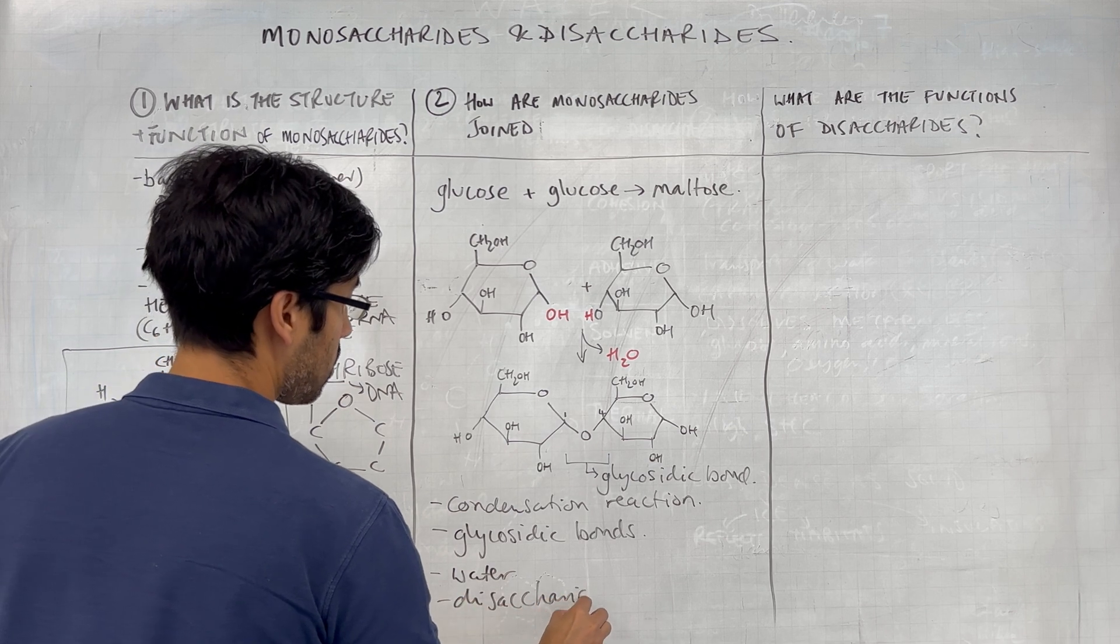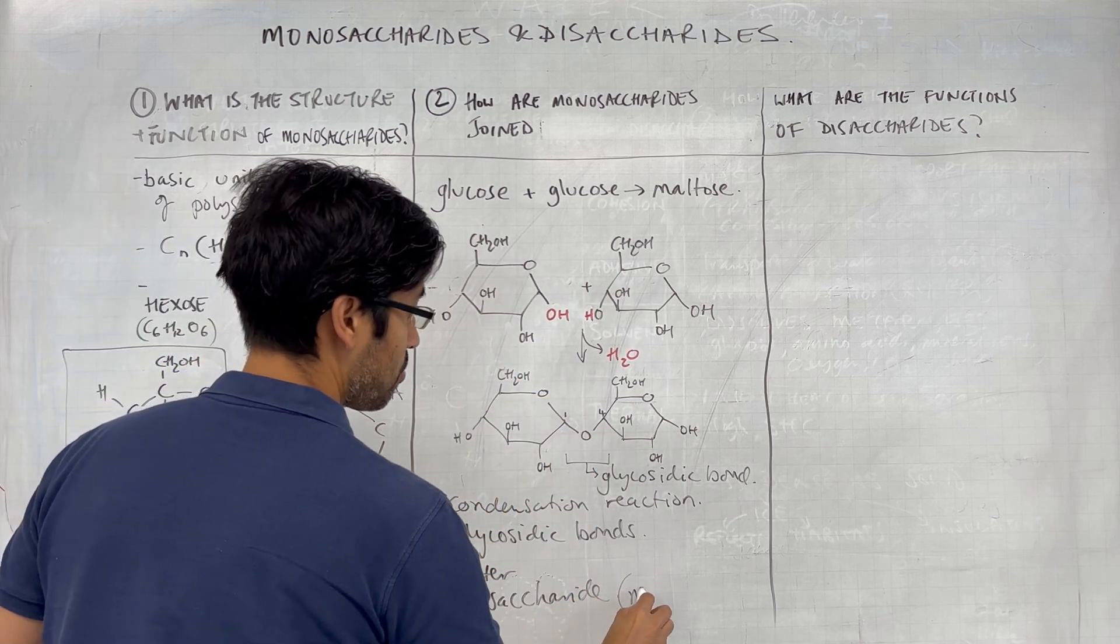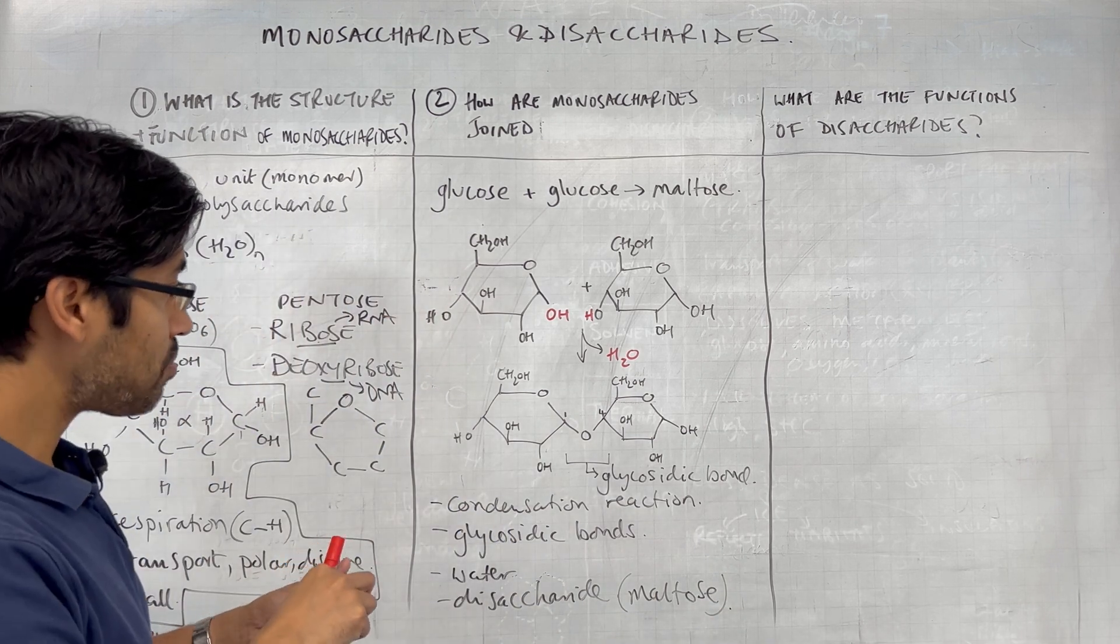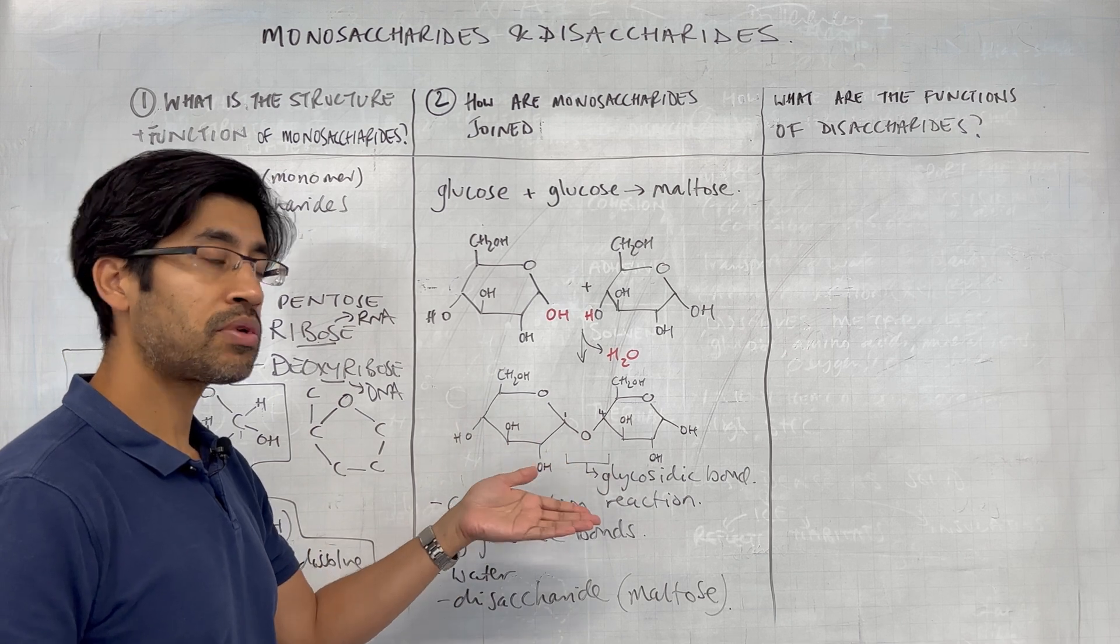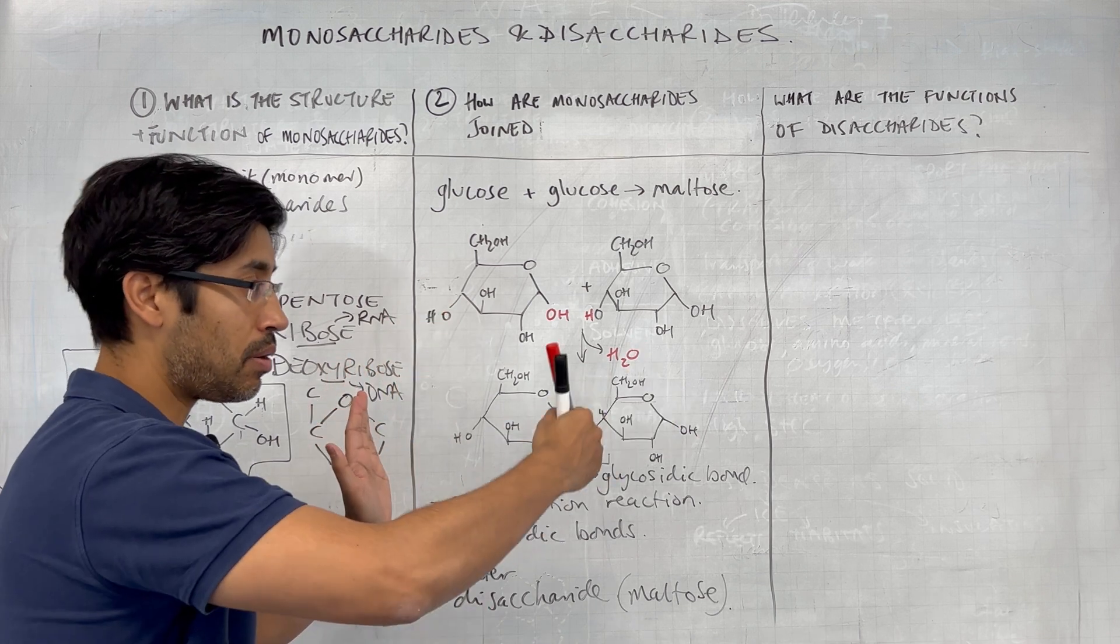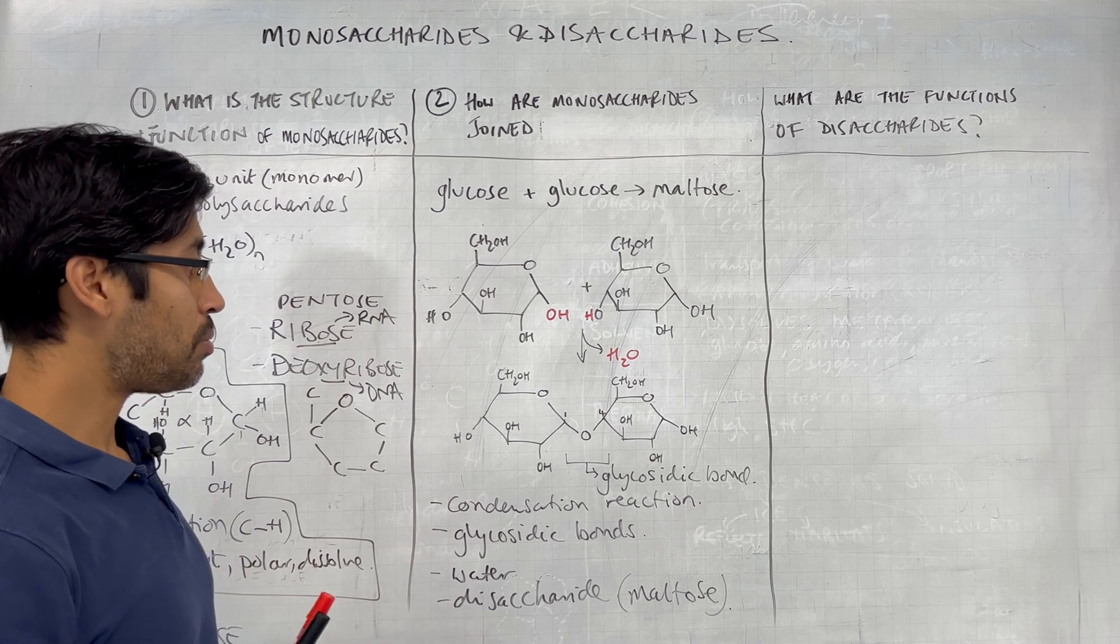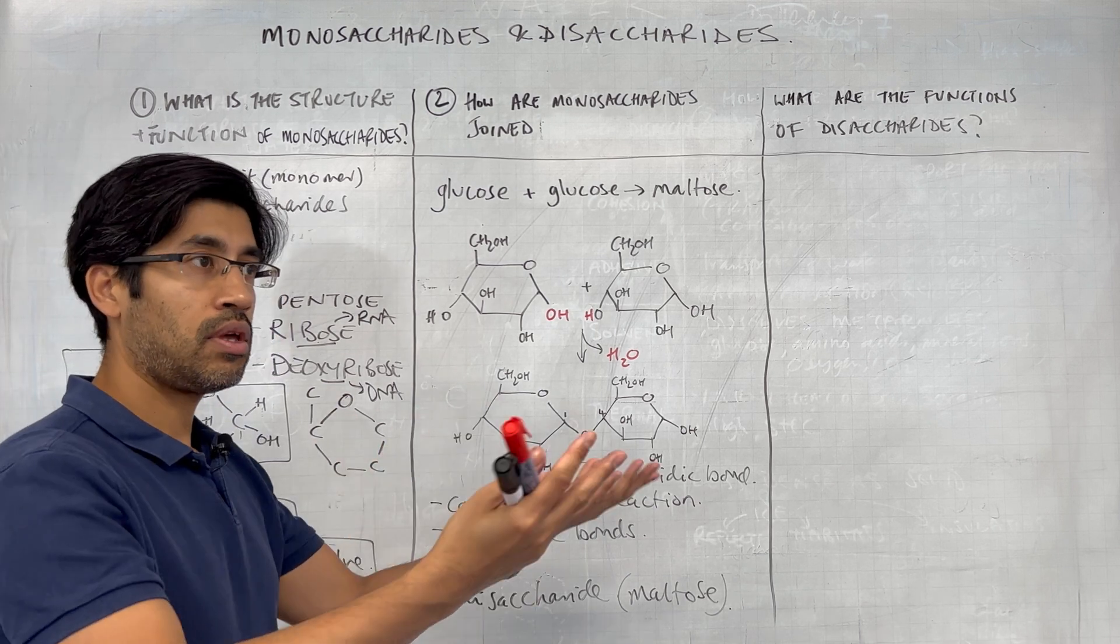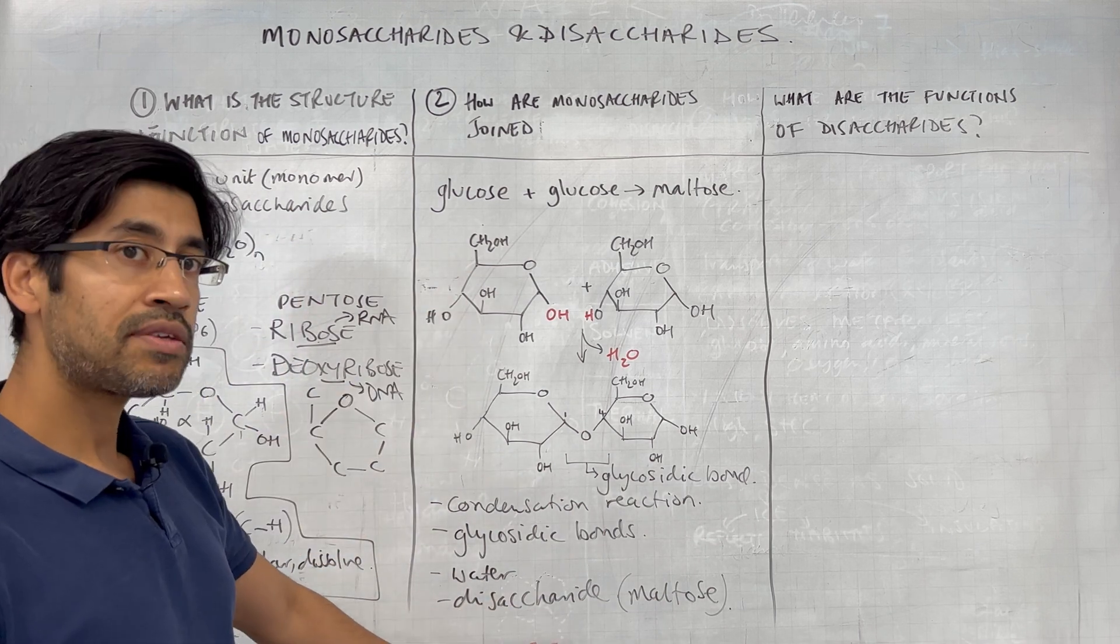And remember, the disaccharide is also produced. So glucose and glucose, and the disaccharide in this case produced, is maltose. And that's basically the fundamentals of how two glucose molecules can come together to form maltose, but that's essentially how many, many glucose molecules can combine end to end to form even longer and bigger, more complex carbohydrates, such as starch, such as cellulose, such as glycogen. So there we have it, that's the formation of a disaccharide.